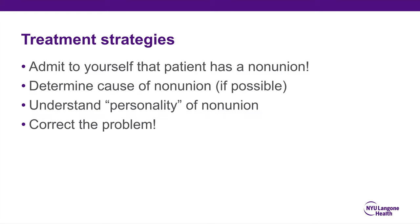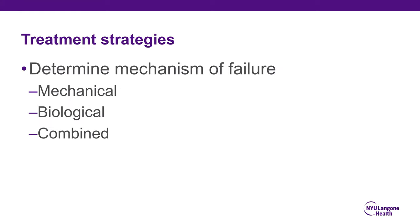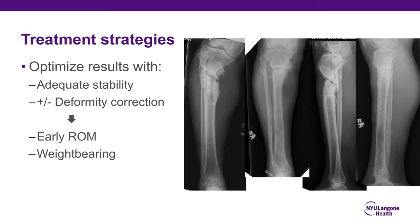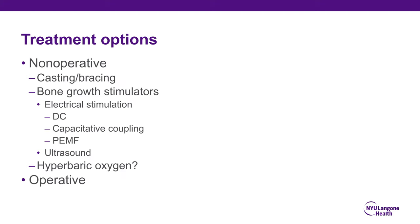The first part of your strategy is to admit to yourself that the patient actually has a non-union. You need to determine the cause, understand the personality of the non-union, and then correct the problem. Determine whether the mechanism of failure was mechanical, biological, or combined. Then optimize results with adequate stability, deformity correction if needed, early range of motion, and weight bearing — making sure you don't end up with an unusable limb even with a healed bone. Non-operative treatment typically doesn't have much of a role. Bone growth stimulators are more voodoo than scientifically proven to work, and hyperbaric oxygen has been touted but the mainstay of treatment is operative.